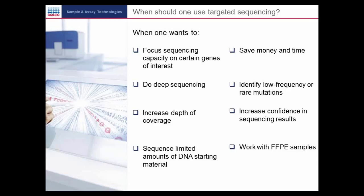Second, do deep sequencing, which identifies low-frequency or rare mutations. For example, in cancer research, we now know that tumors are very heterogeneous samples consisting of several cell types, which results in certain mutations being present in a very low number of cells relative to the entire population. The identification of these low-frequency or rare mutations can be achieved very efficiently by targeted sequencing.